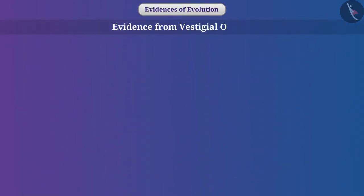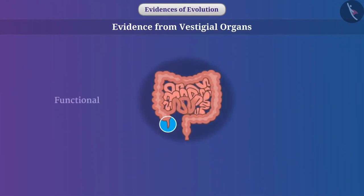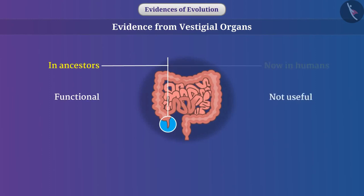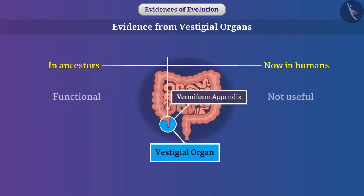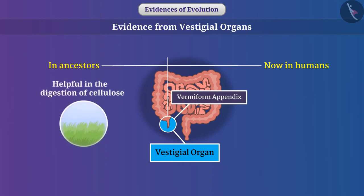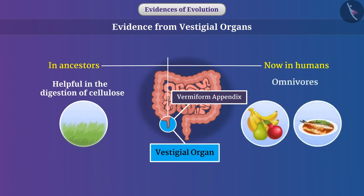Evidence from vestigial organs: Organisms have organs that were functional in their ancestors but are now not at all useful. These are called vestigial organs. For example, in the ancestors of humans, the vermiform appendix was helpful in digestion of cellulose. During development, humans became omnivores and the amount of cellulose in food decreased, making the vermiform appendix a vestigial organ.